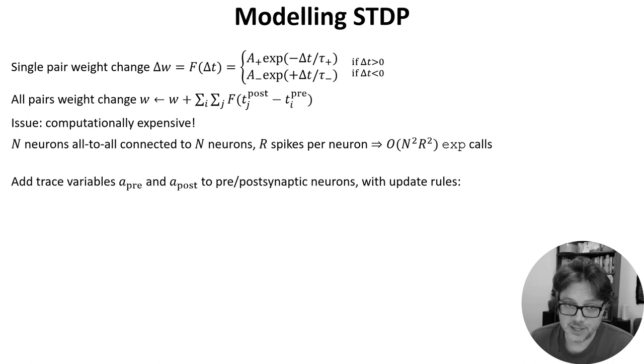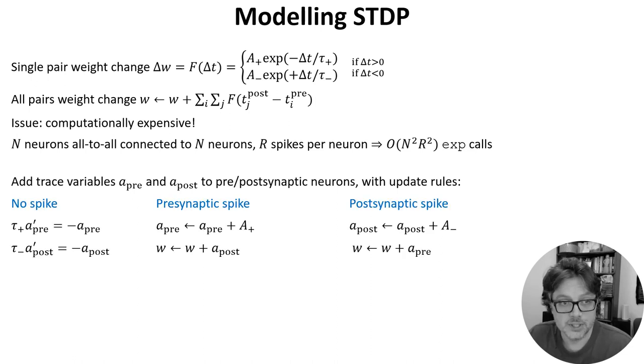But there's a trick, using the fact that it's exponentials and linear sums that can simplify this. For each presynaptic neuron, we introduce what is called a trace variable, a_pre, and we do the same with the postsynaptic neurons in a trace variable, a_post. Now, we update them according to these rules. In the absence of a spike, they decay exponentially, like we've seen in the leaky integrate and fire neuron. The presynaptic trace with a time constant tau_plus, and the postsynaptic neuron with a time constant tau_minus. When a presynaptic spike arrives, a_pre is increased by this constant, A_plus. And then w is increased by a_post. And similarly for when a postsynaptic spike arrives, but with pre and post and plus and minus swapped.